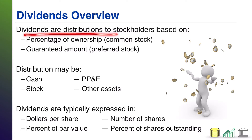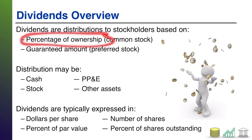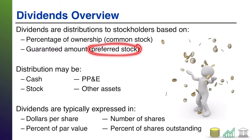Dividends are specifically distributions to stockholders, so when you give the stockholders something back, that is known as a dividend. Typically, your dividend is based on the percentage of your ownership. For example, if you own five percent of the company's common stock and the company declares a dividend, you will be entitled to five percent of that dividend.